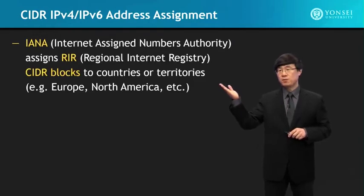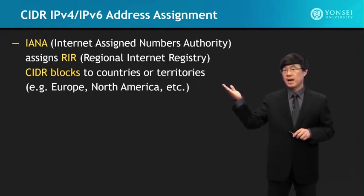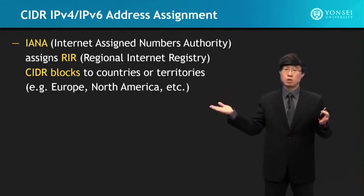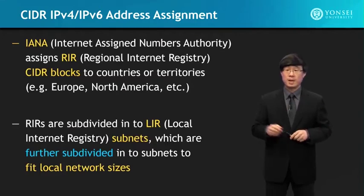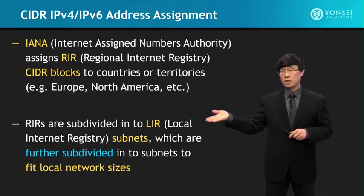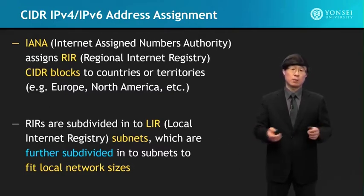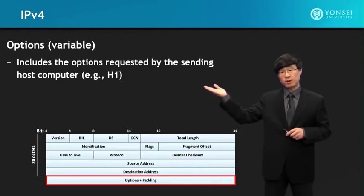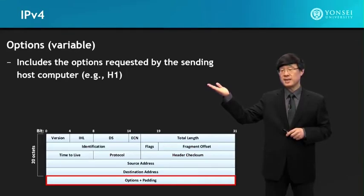For CIDR IPv4 and IPv6 address assignments, the IANA (Internet Assigned Numbers Authority) assigns Regional Internet Registry (RIR) CIDR blocks, assigned to countries and huge territories. These RIRs are subdivided into LIR (Local Internet Registry) subnets, which are further subdivided into subnets that fit the local network size. The options field in the IPv4 header includes options requested by the sending host computer.